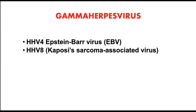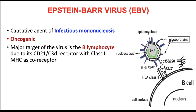Let's start with the gamma herpes viruses. This would include HHV4, the Epstein-Barr virus, and HHV8 or Kaposi's sarcoma-associated virus. Epstein-Barr virus is the causative agent of infectious mononucleosis, or IM, or mono. We know that this is oncogenic, meaning it has a capacity to cause mutations and neoplasms or cancers.